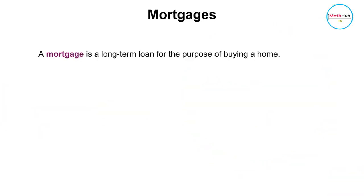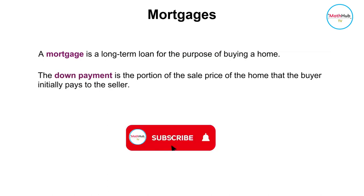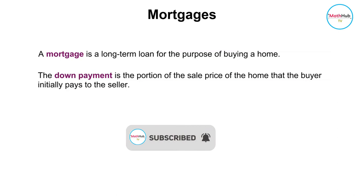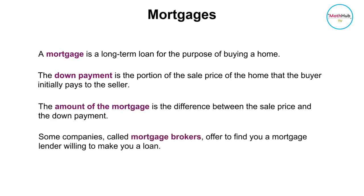A mortgage is a long-term loan for the purpose of buying a home. The down payment is the portion of the sale price of the home that the buyer initially pays to the seller. The amount of the mortgage is the difference between the sale price and the down payment. Some companies called mortgage brokers offer to find you a mortgage lender willing to make you a loan.